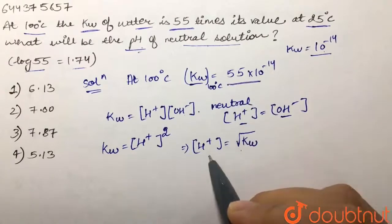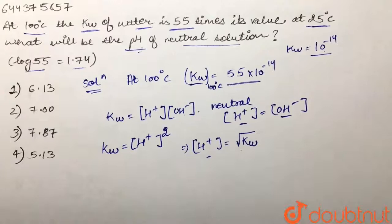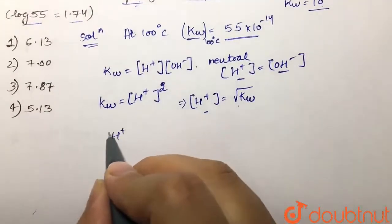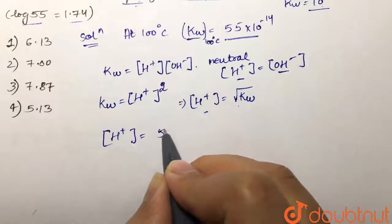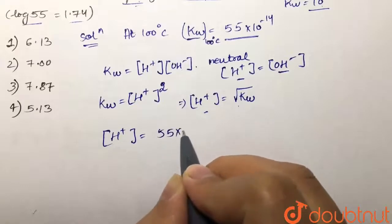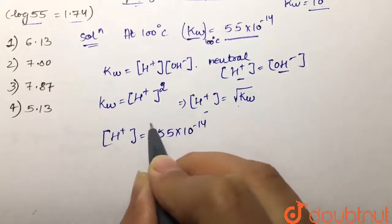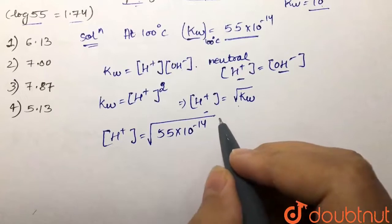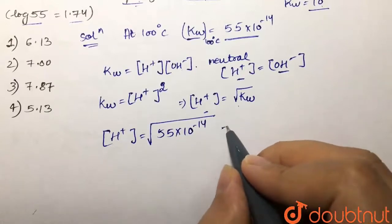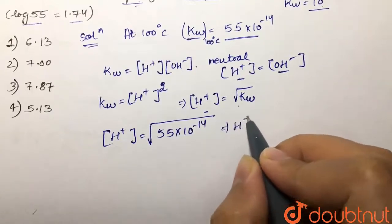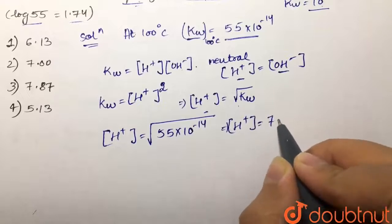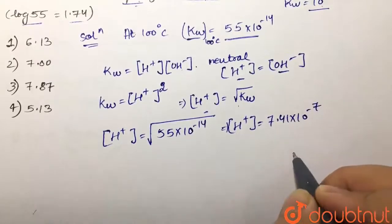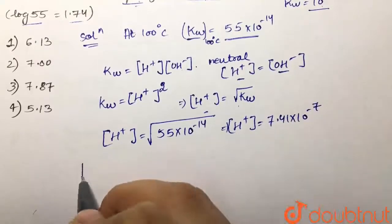Now we put the Kw value in to find the hydrogen ion concentration. So [H⁺] equals the square root of 55 × 10⁻¹⁴. When we evaluate this, we get [H⁺] equal to 7.41 × 10⁻⁷.